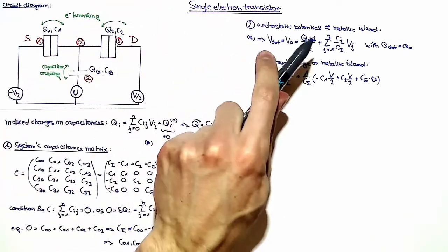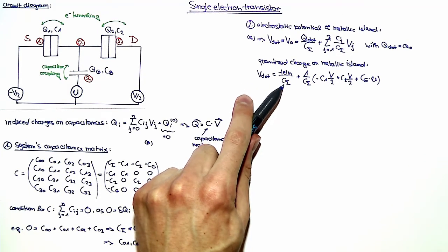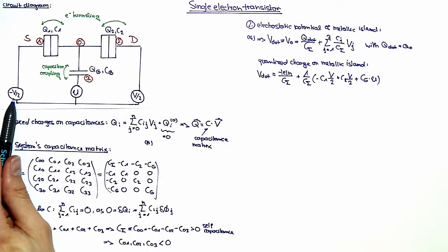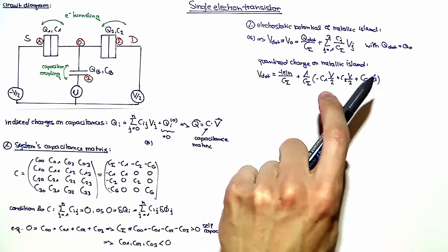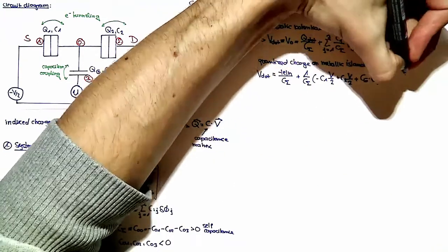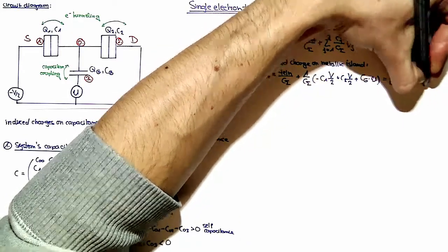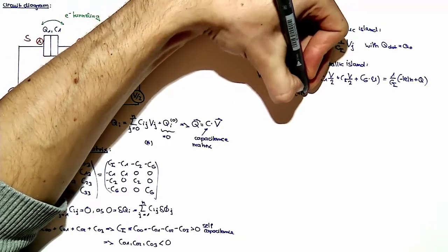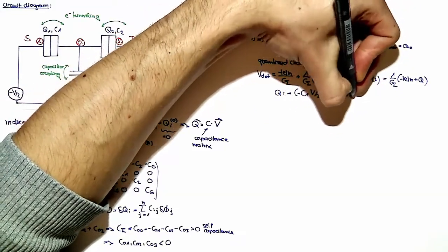Considering charge quantization, q_dot equals minus e times an integer n. We rewrite the first term and plug in the applied voltages: minus V over 2 for capacitor C_1, plus V over 2 for capacitor C_2, and voltage U for C_g. This gives v_dot equals one over C_sigma times the quantity minus e times n plus q, where q is defined as minus C_1 times V over 2 plus C_2 times V over 2 plus C_g times U.